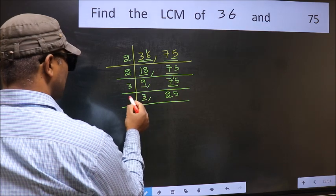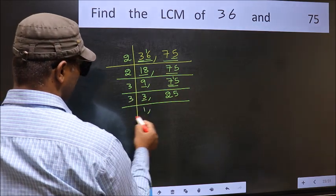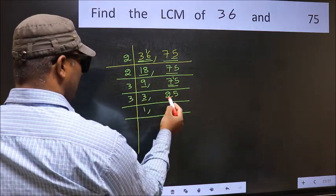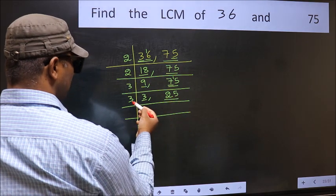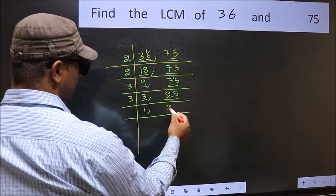Now here we have 3. 3 is a prime number, so 3 times 1 is 3. The other number 25, not divisible by 3, so you write it down as it is.